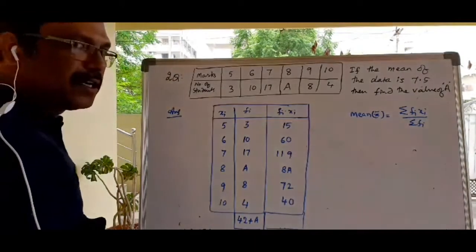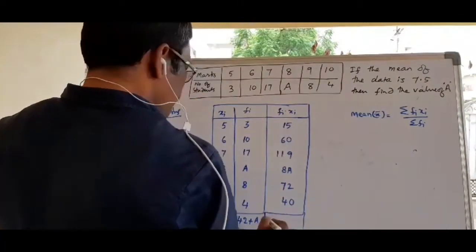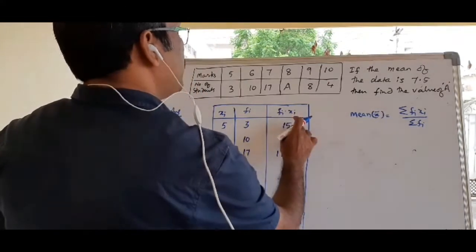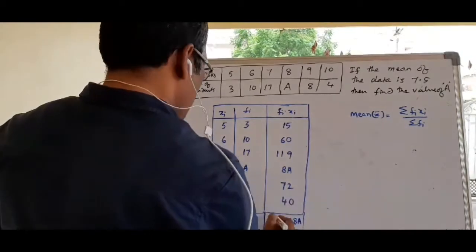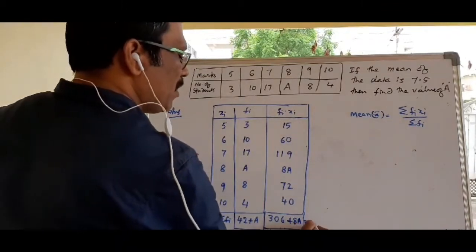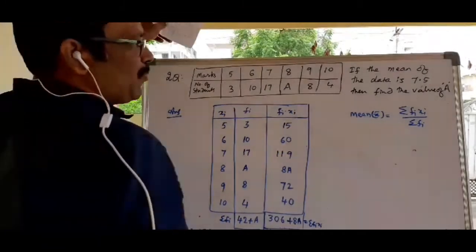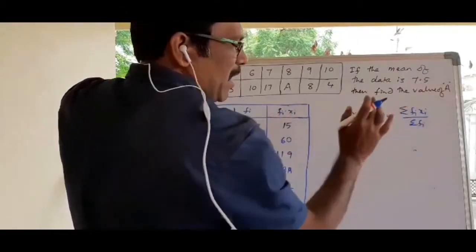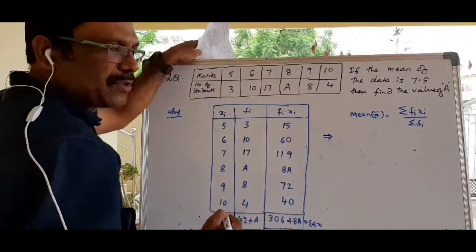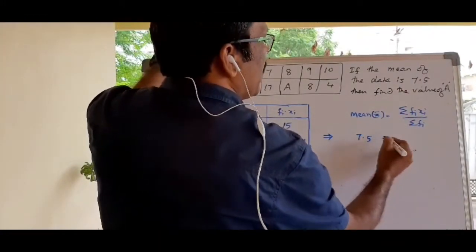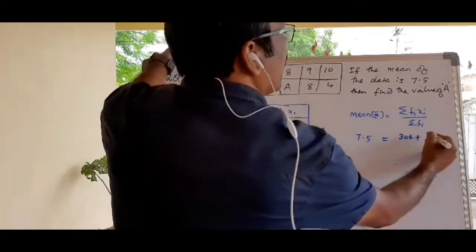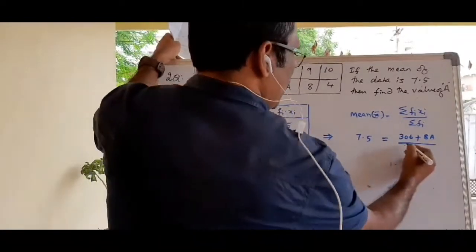Note that σfi = 42 + A (written as 42 plus A, not 42A). Adding the known products: 15 + 60 + 119 + 72 + 40 = 306, so σfixi = 306 + 8A. Now substituting into the formula: mean = 7.5 = (306 + 8A) / (42 + A).